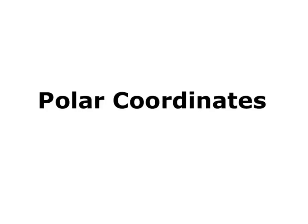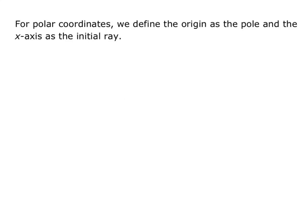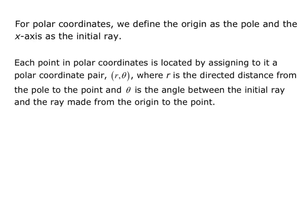In this video, we discuss polar coordinates. For polar coordinates, we define the origin as the pole and the x-axis as the initial ray. Each point in polar coordinates is located by assigning to it a polar coordinate pair (r, θ), where r is the directed distance from the pole to the point, and θ is the angle between the initial ray and the ray made from the origin to the point. In other words, r is the straight-line distance from the origin to the point, and θ is the angle made with the positive x-axis.